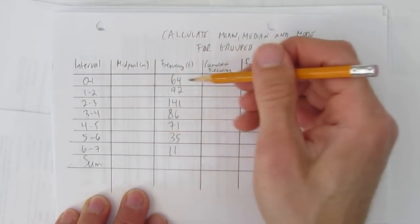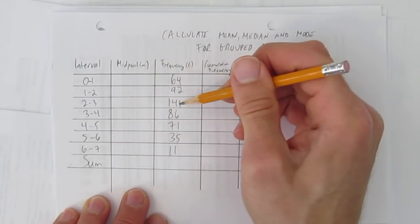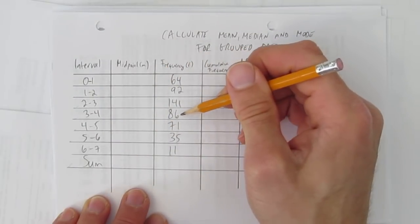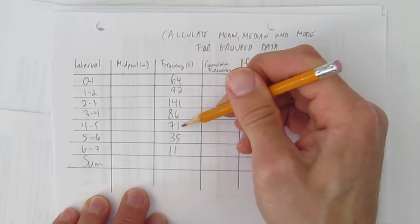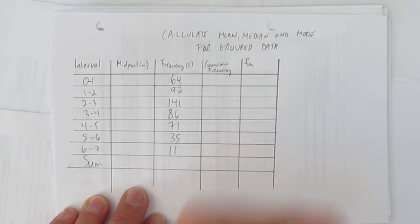That is, in the intervals 0 to 1 there's 64, in 1 to 2 there's 92, in 2 to 3 there's 141, 3 to 4 there's 86, 4 to 5 there's 71, 5 to 6 there's 35, and 6 to 7 there's 11 things.